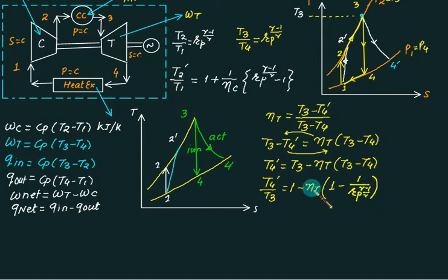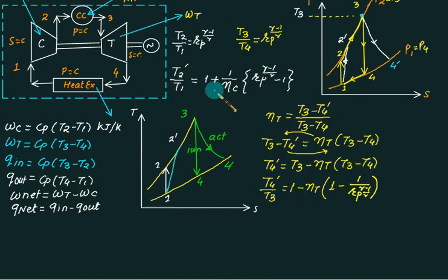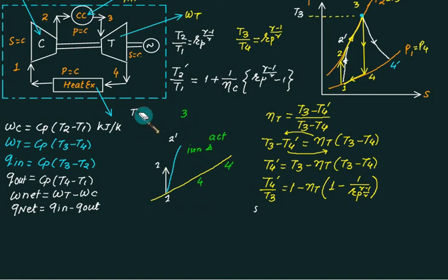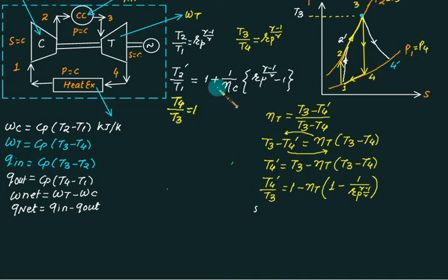In one step you can calculate T4-dash using this equation. Notice that the compression and expansion figures are mirror images of each other. Comparing the two equations, the turbine equation has T4-dash over T3 on the left, uses a minus sign instead of plus, uses eta_t instead of 1/eta_c, and the rp term is reciprocal. You can write the turbine equation directly from the compressor equation by applying these substitution rules.